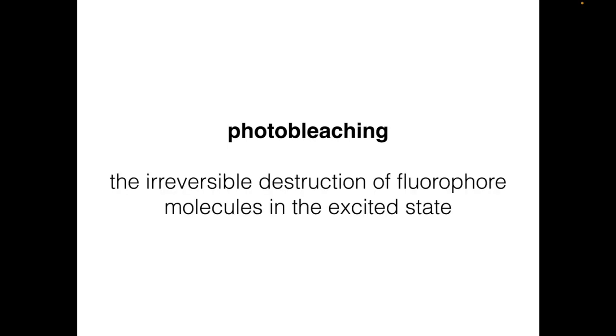When a fluorophore molecule is excited, we want it to undergo the process of fluorescence — that is, to emit a photon and drop back to the ground state. However, this doesn't always happen. Whenever the fluorophore is in the excited state, there is some probability that it will undergo a reaction that destroys the fluorophore. This is called photobleaching, defined as the irreversible destruction of fluorophore molecules when they are in the excited state.